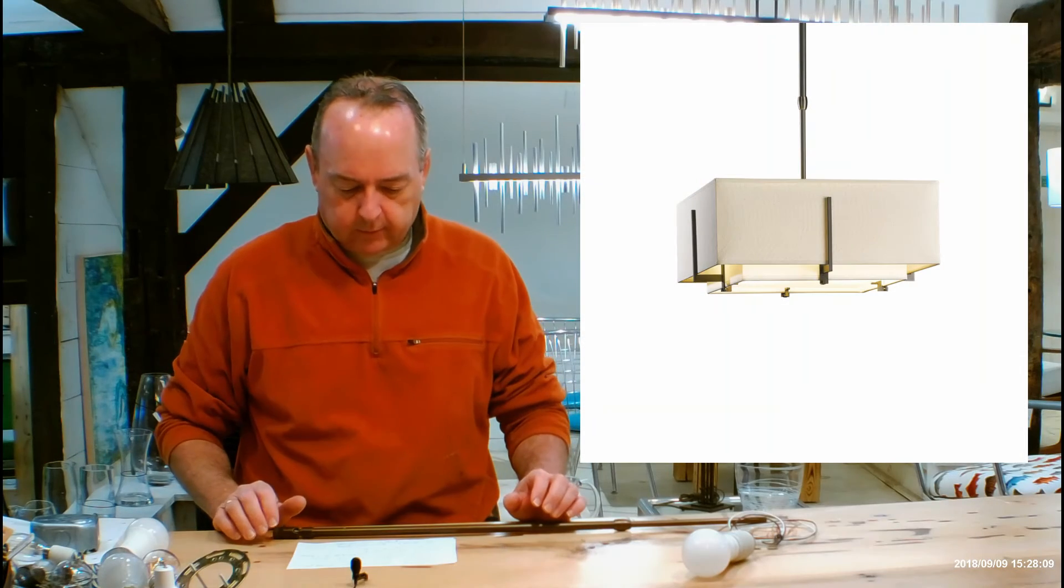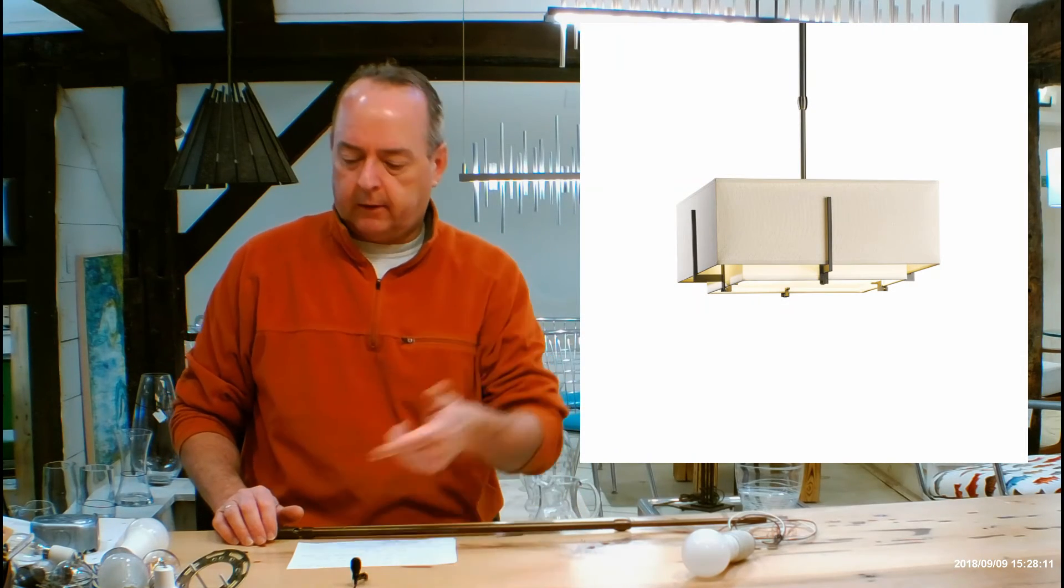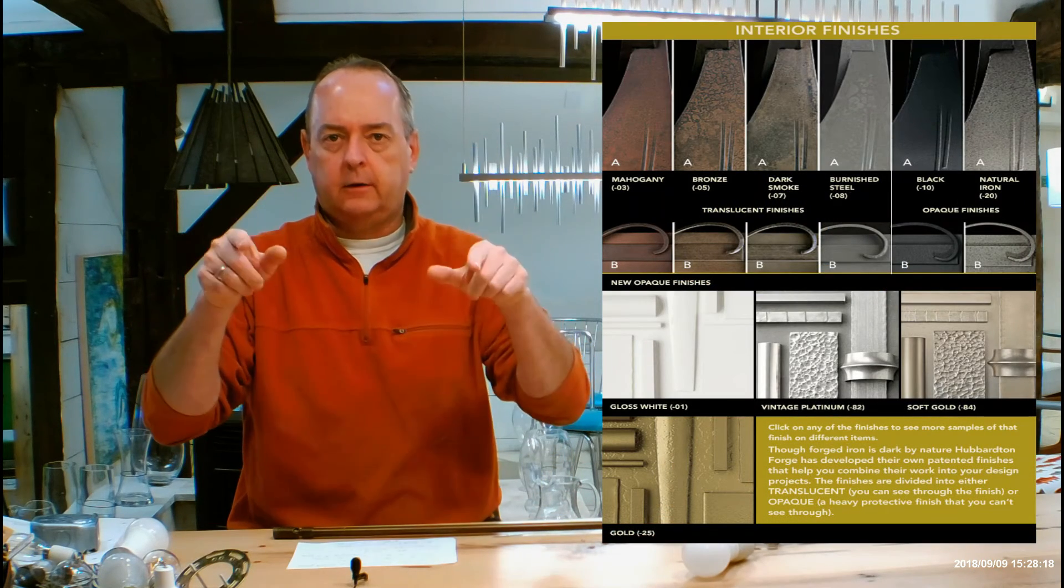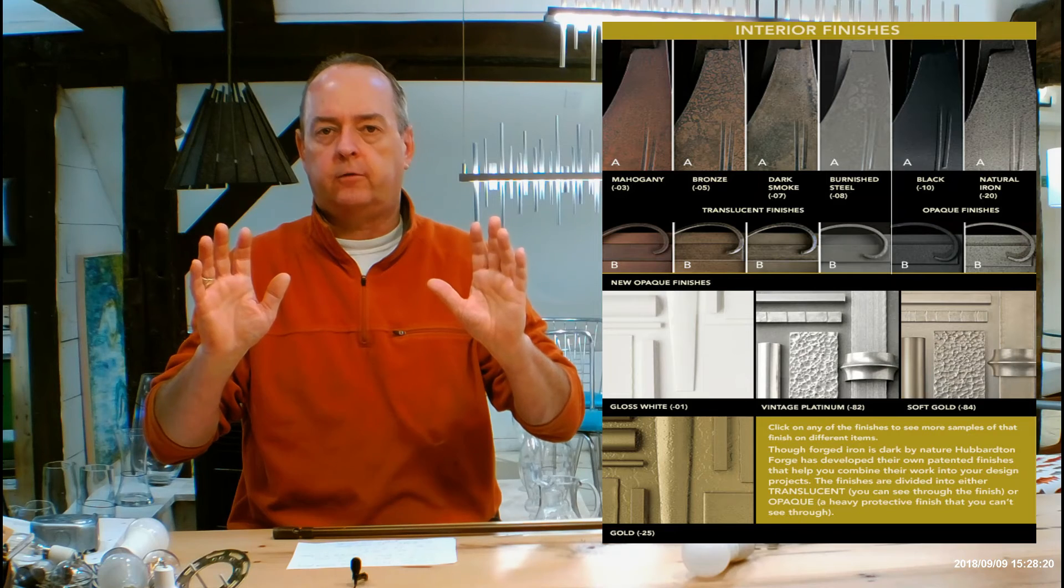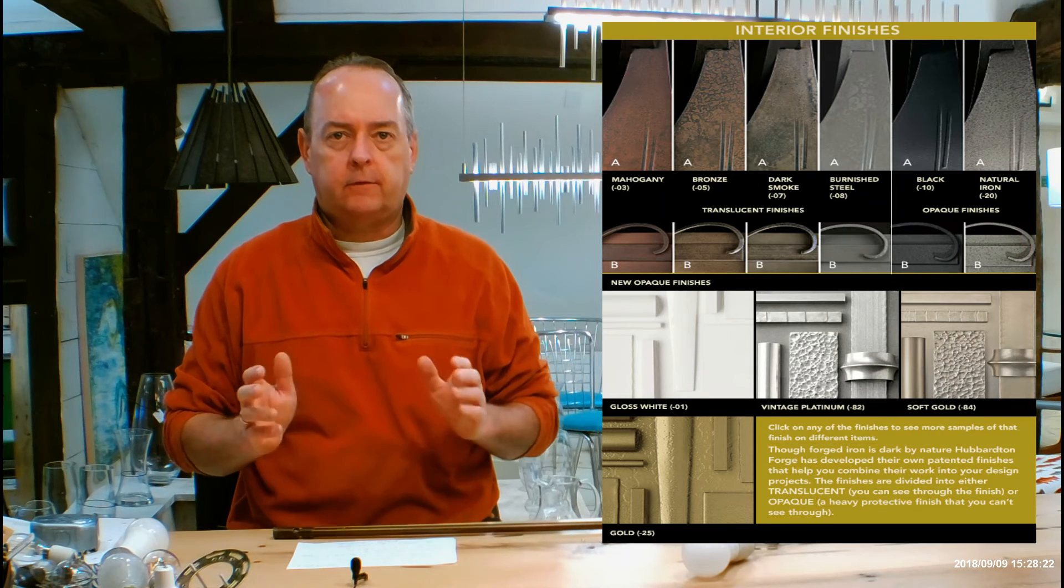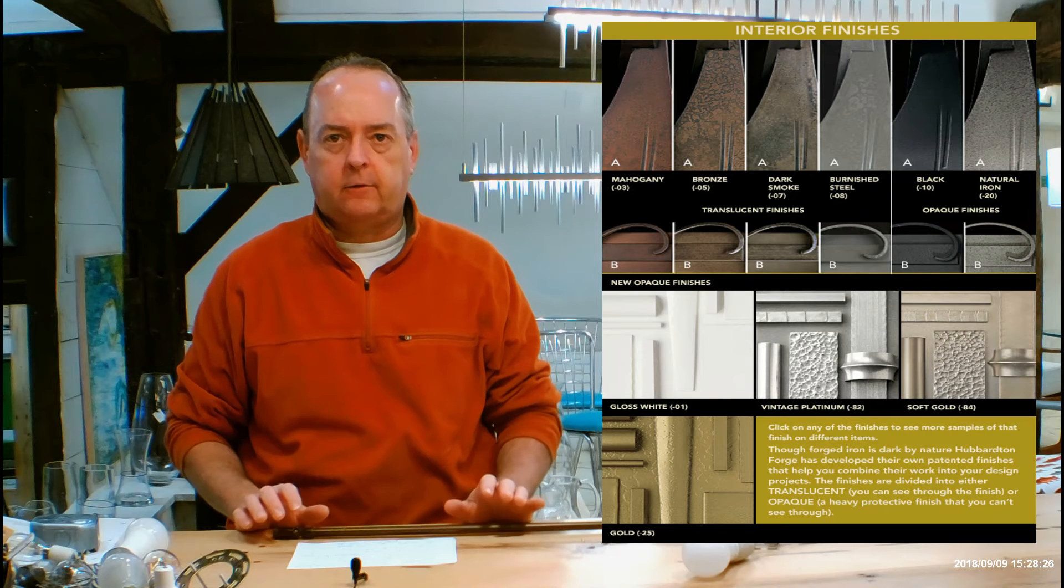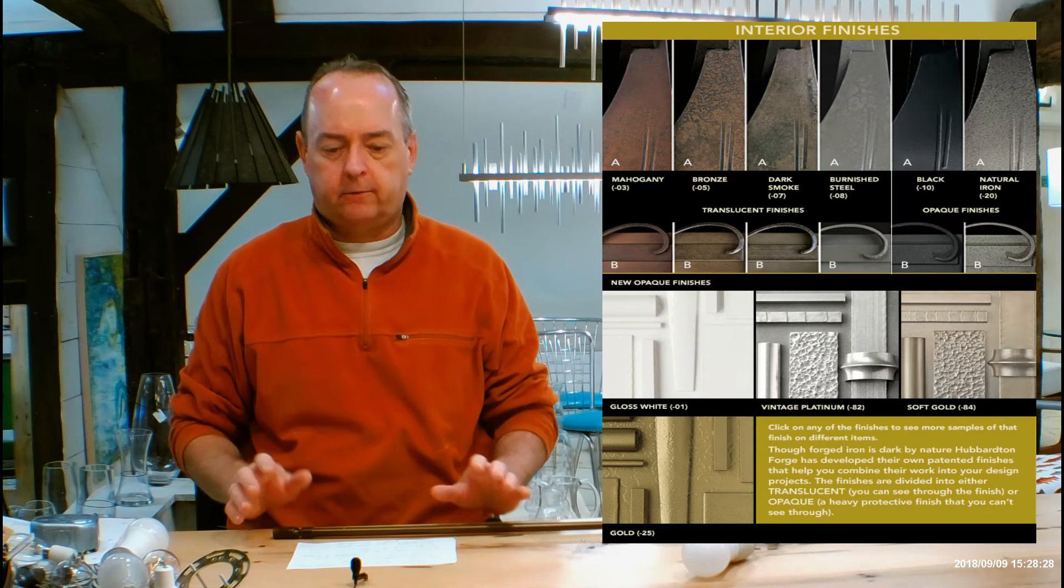Moving on from there, why don't we talk about metal finishes. Back on our website again, you're going to see a finishes help guide. Click on that. You're going to see a video at the top, me talking to you guys about the differences in Hubbardton Forge finishes, how they look on different types of forging. Scroll down, you're going to see a color chart and that chart is going to have the 10 finishes this fixture comes in.